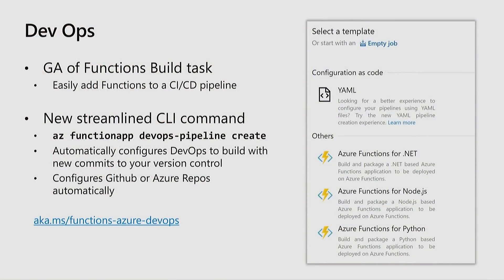We've improved our Azure DevOps support. We GA'd the Functions build task, with proper first-party support for Azure Functions build tasks in DevOps pipelines for .NET, Node.js, and Python. We also have a new streamlined CLI command: 'az functionapp devops-pipeline create'. This lets you create an entire DevOps pipeline configured for your version control of choice — GitHub or Azure Repos. It sets up all the YAML for you. This was motivated by the fact that not everyone uses Visual Studio, so this CLI command lets you create a DevOps pipeline on Mac, Linux, or wherever you develop.